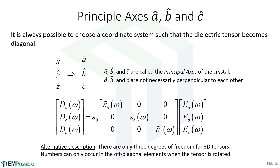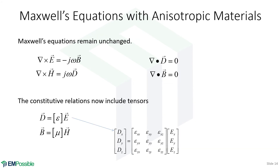If we have Maxwell's equations with anisotropic materials, notice Maxwell's equations themselves remain unchanged — that's because material properties don't appear in Maxwell's equations; they appear in the constitutive relations. Our constitutive relations also look very similar, except we draw square brackets around mu and epsilon to remind us that these quantities are now tensors. That's because charges can displace in some directions more easily than others, giving a different value of permittivity in different directions.